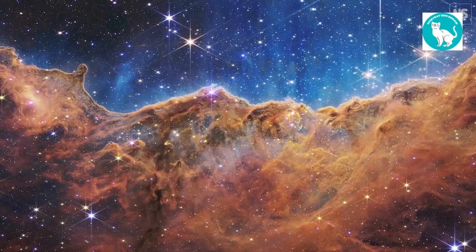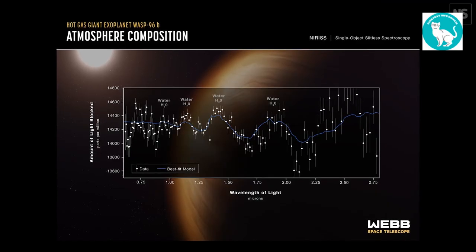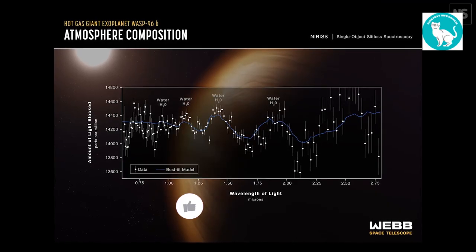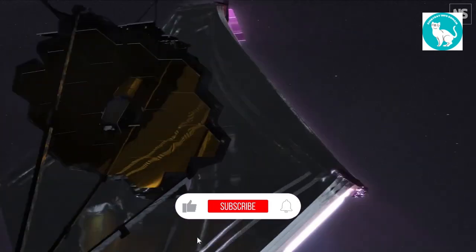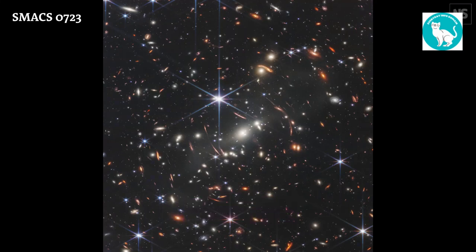JWST will orbit the Sun at a distance roughly 1 million miles beyond Earth's orbit, as opposed to orbiting Earth like its forerunner, the Hubble Space Telescope. The 30-year-old space telescope was launched in December 2021 and reached its final location in January.